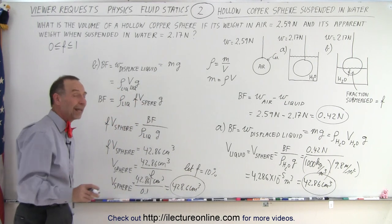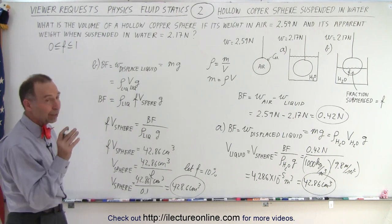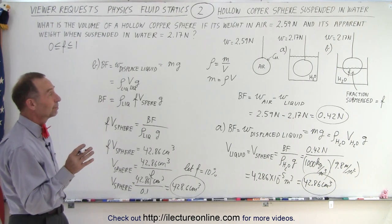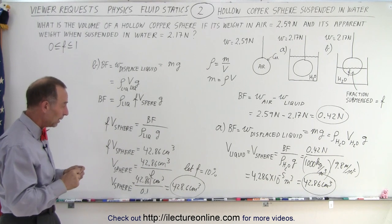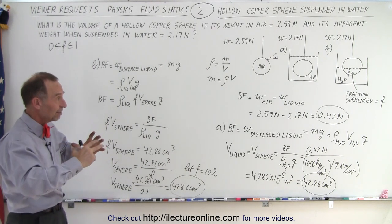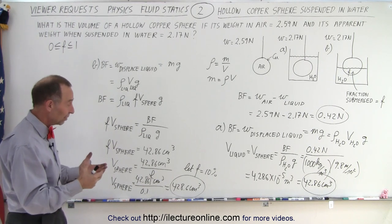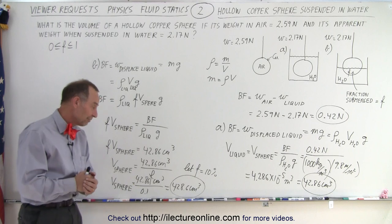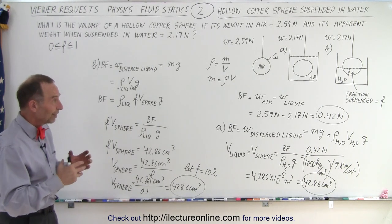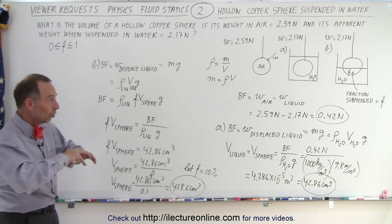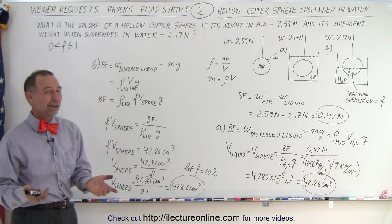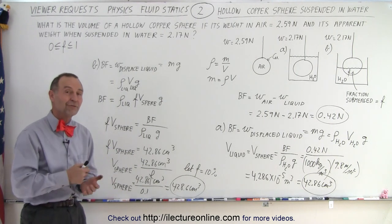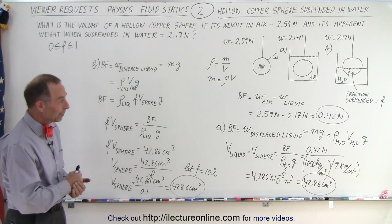Notice that the less of the sphere's volume that is submerged, the larger the total volume of the sphere itself. That's how you work the problem either way. The only missing piece is knowing what fraction of the sphere's volume is submerged in the liquid, and that's how the solution is obtained.